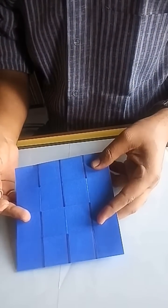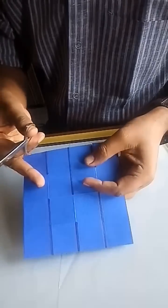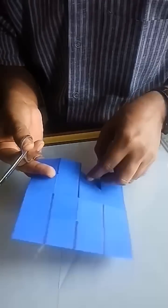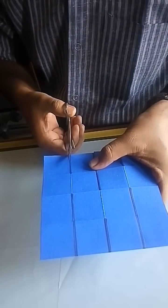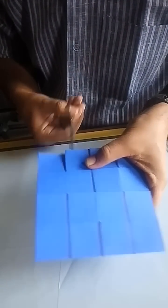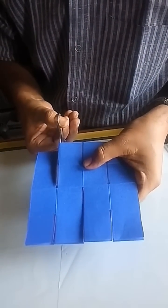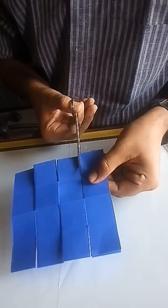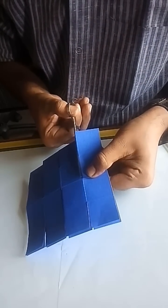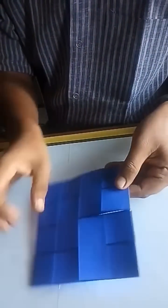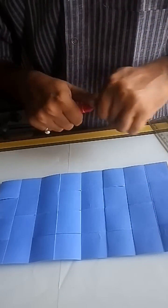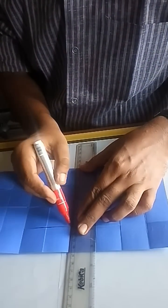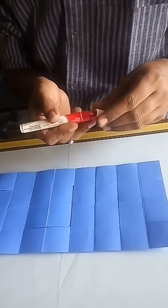Now cut the marked lines, and cut the mid line of the two squares only as shown.